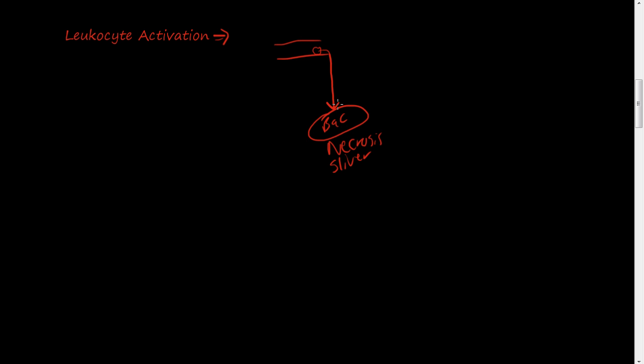Now we're going to talk about once they get there, how do they become active? I'm going to draw here a cell, and here's the nucleus. On the cell, leukocytes have proteins, proteins in their membrane, little receptors if you will. And there's a receptor called a toll-like receptor.